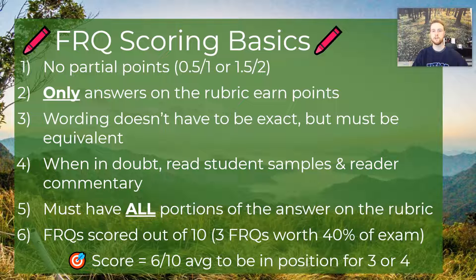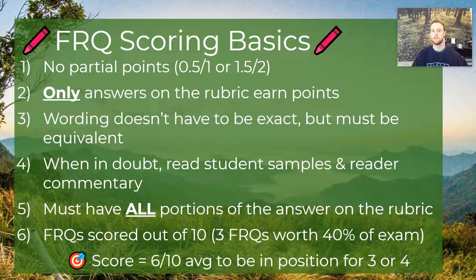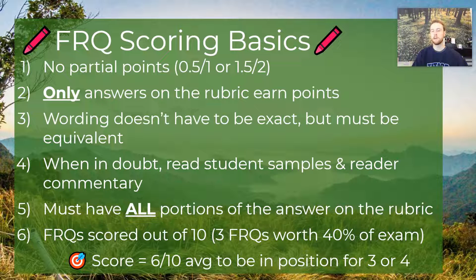Each FRQ will be scored out of 10 points. There will be three FRQs on the 2021 exam, and presumably those will each be out of 10 points. I know last year there was a 12 and an 8, but that was extenuating circumstances. What I tell my students is that their target score should be about a 6 out of 10. If you score about a 6 out of 10 on average on the three FRQs and combine that with a similar average on multiple choice, that should put you in range to get a solid 3 or potentially a 4. There are no official cut scores released, but if you're consistently scoring a 6 out of 10 average on FRQs and 60% on multiple choice, you should be in solid shape for a high 3 or a low 4.